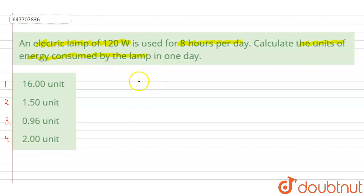Which of the following option is the correct option? An electric lamp of 120 Watt is given. What is the unit of power?